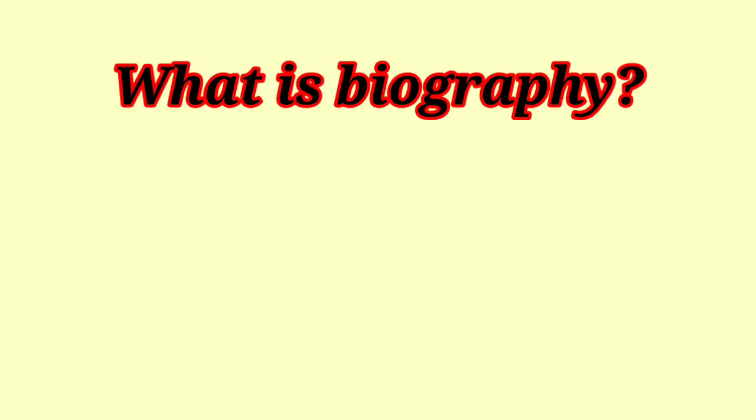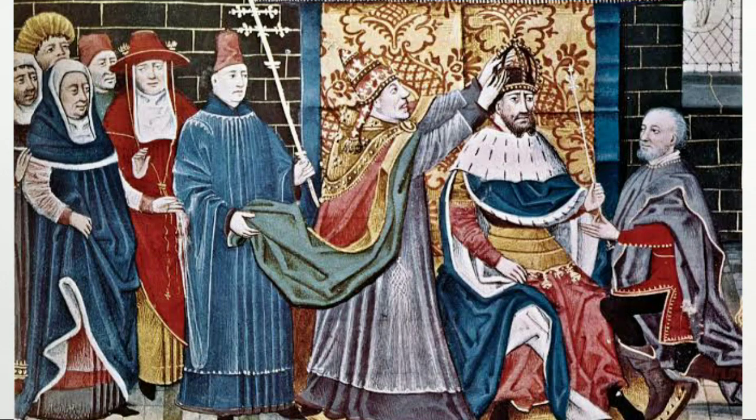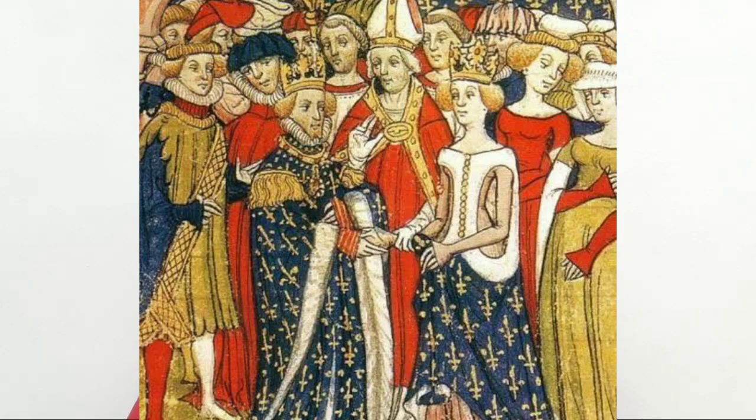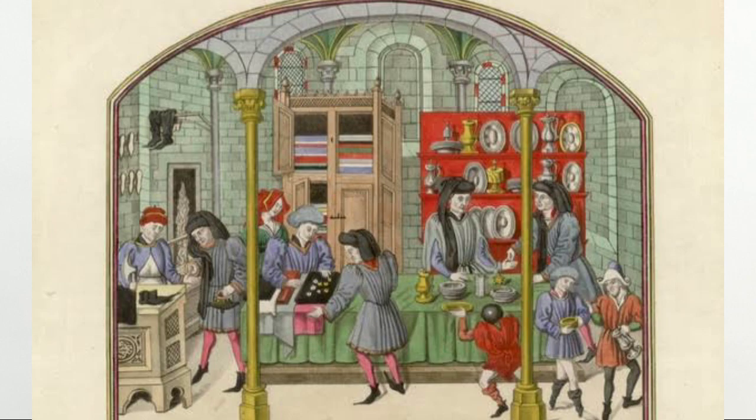Moving to the next type of literary source: biography. Biography is something written on the life of other people — when you are inspired by somebody and write a book about their life. During earlier times, kings used to have poets and writers in their court who wrote biographies describing the rule of the king, how they ruled, the life of common people, and their policies.